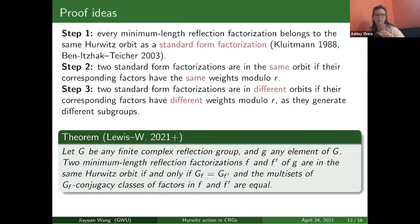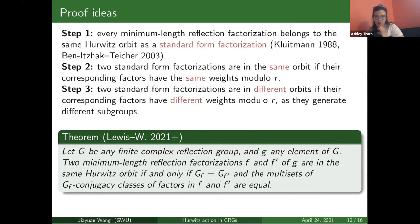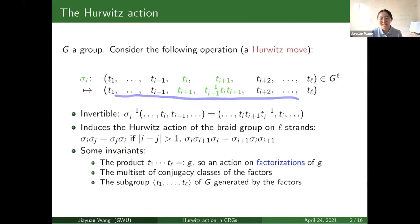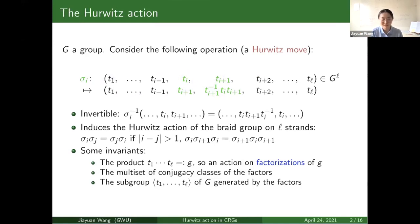Another question: What does the Hurwitz action mean for a real reflection group, like a Coxeter group? Response: The Hurwitz action is just this move where you take a factorization and move the factors around while maintaining the same product. This is not specific to complex or real groups. If we are talking about real groups, then all those factors are just real reflections; if complex, they are complex reflections. There's no huge difference — it's just an operation where you can move around factors.